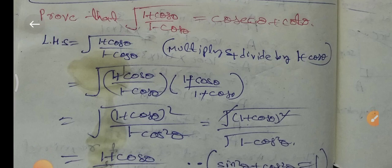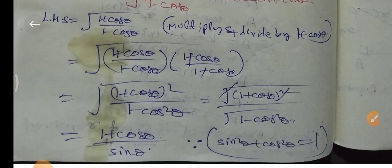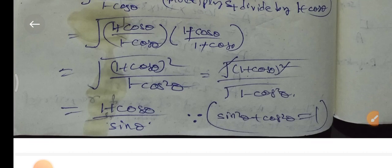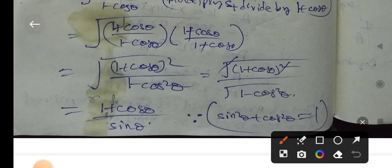This gives root of (1 plus cos θ)² over (1 minus cos²θ). The numerator becomes root of (1 plus cos θ)², which simplifies to (1 plus cos θ). The denominator root of (1 minus cos²θ) equals root of sin²θ, since sin²θ plus cos²θ equals 1. The square root and square cancel.